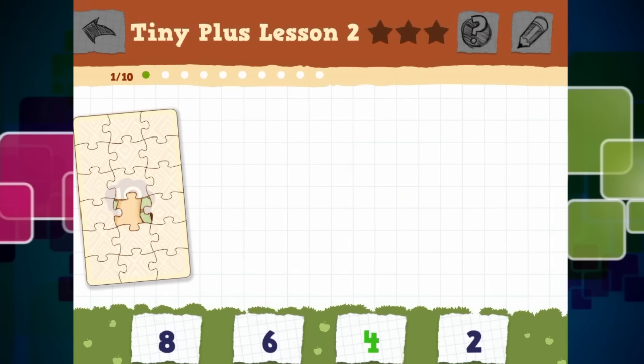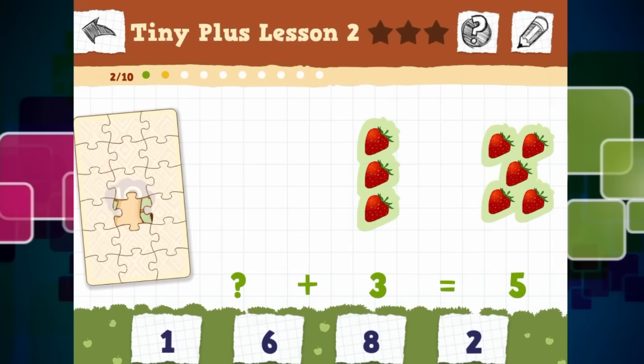And as you can see to the left hand side, we are starting to build a puzzle, a jigsaw puzzle. And as you can see at the top, there is ten questions and we are on question two. And when we get them all right, that means we get three stars and we get to move on to the next level.